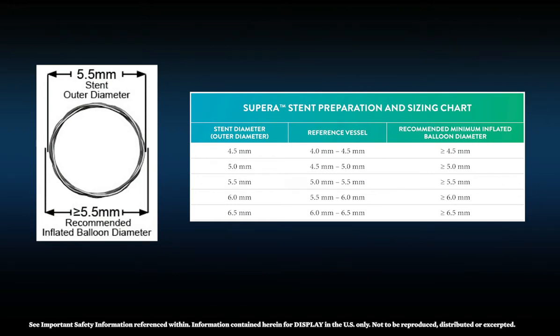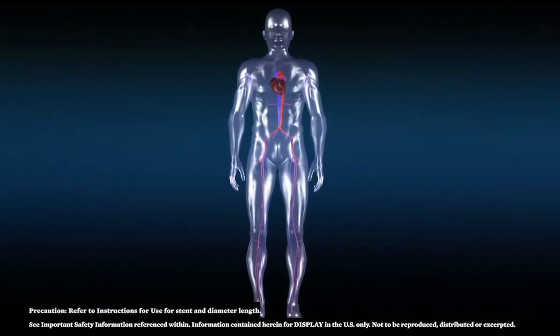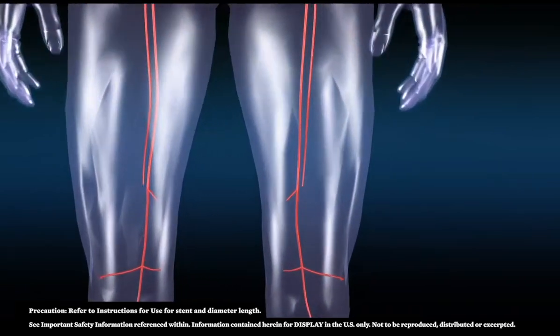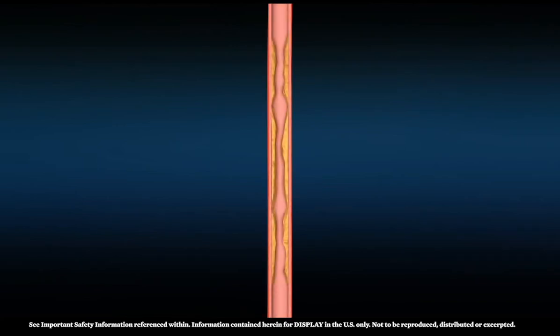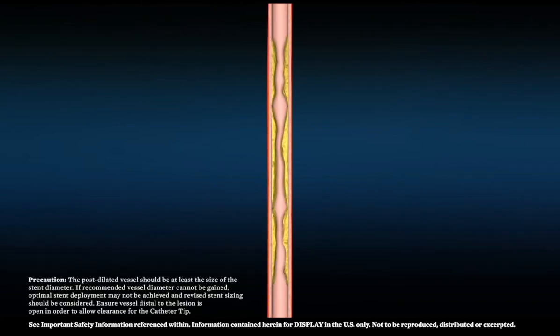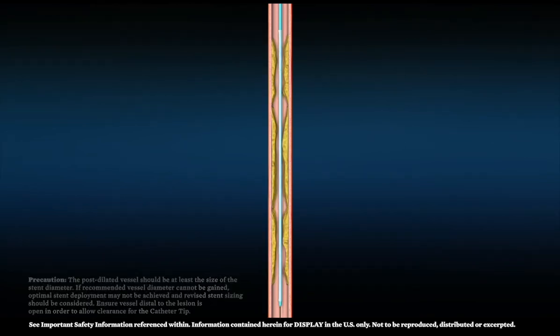The stent diameter and vessel preparation table displays the recommended minimum balloon inflation diameter for each corresponding labeled stent diameter. Select a stent diameter corresponding to the reference vessel diameter and a length long enough to cover the target lesion. For this example, a 5.5 mm Supera has been selected. Prepare the vessel utilizing standard angioplasty technique using a balloon size greater than or equal to the stent diameter.